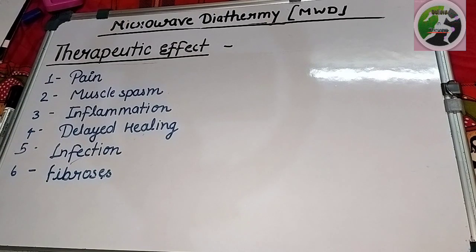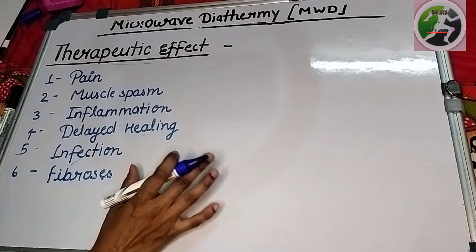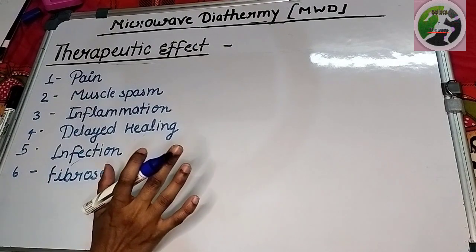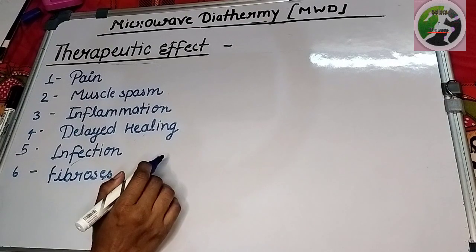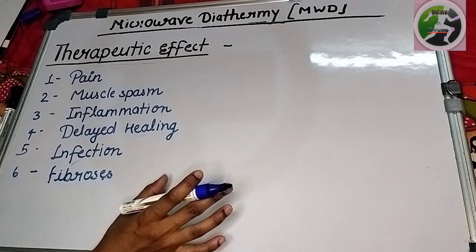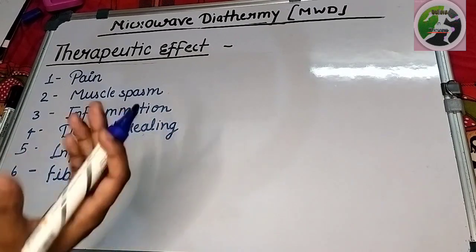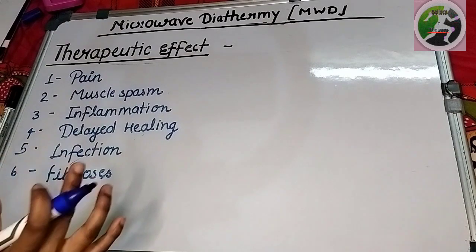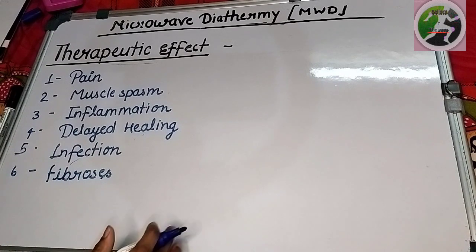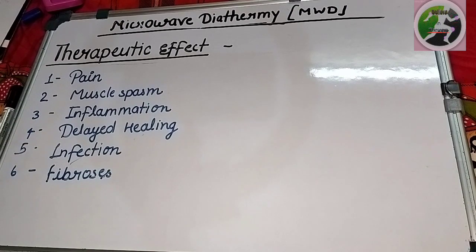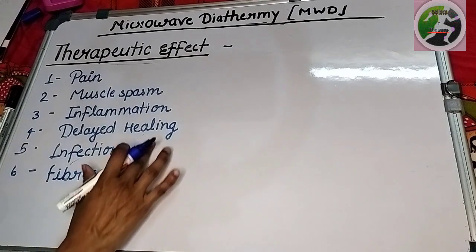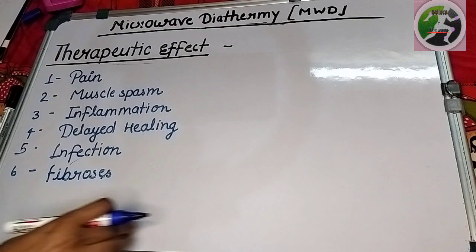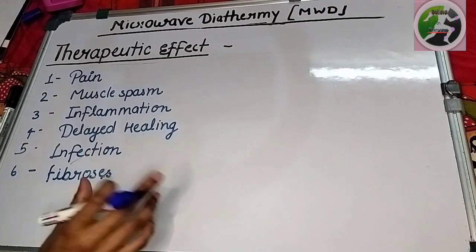The next point is infection. When there is chronic infection, we use MWD. We do not use it for acute infection because there is more spread of infection. MWD improves blood circulation. When blood circulation is good, we get more WBCs. When there are antibodies and white blood cells, they spread and kill the infection.